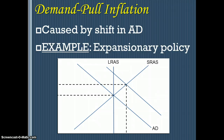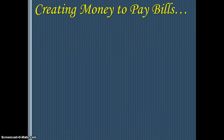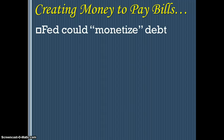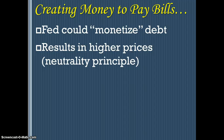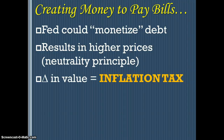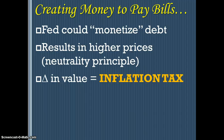One expansionary policy to be aware of is monetizing the debt — a strategy the Federal Reserve pursues to help fund the national debt. They create money to pay the government's bills by purchasing through open market operations the federal debt held by individuals and institutions, thereby increasing the money supply. As a result, they're raising prices and creating inflation, and individuals suffer what is known as an inflation tax — the value of the money you hold today is worth less than yesterday because of inflation.